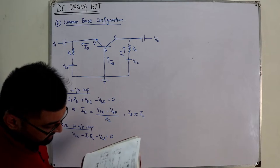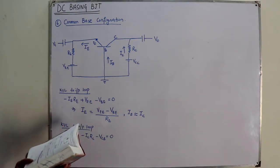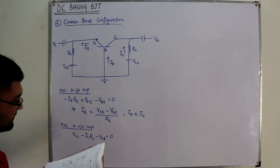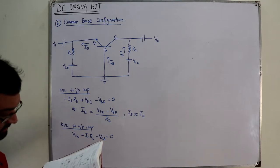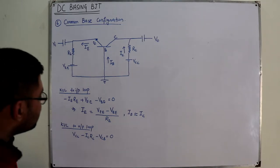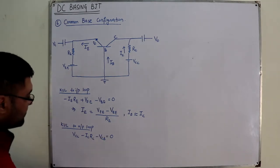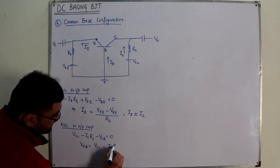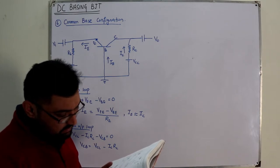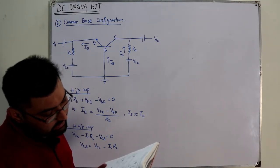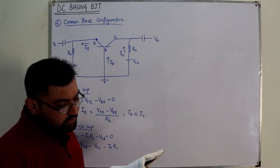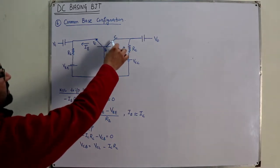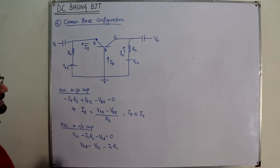Correcting the output loop KVL: VCB + IC·RC − VCC = 0, so VCB = VCC − IC·RC. IC is approximately equal to IE. We can also apply KVL to the entire outside perimeter of the network, covering collector-to-base and base-to-emitter together.